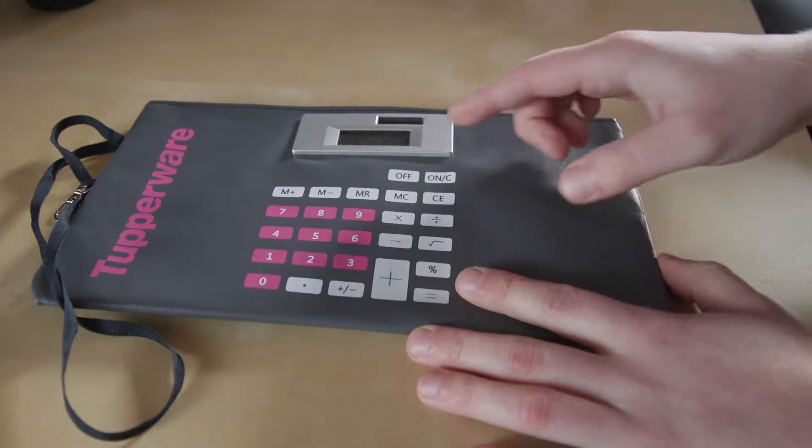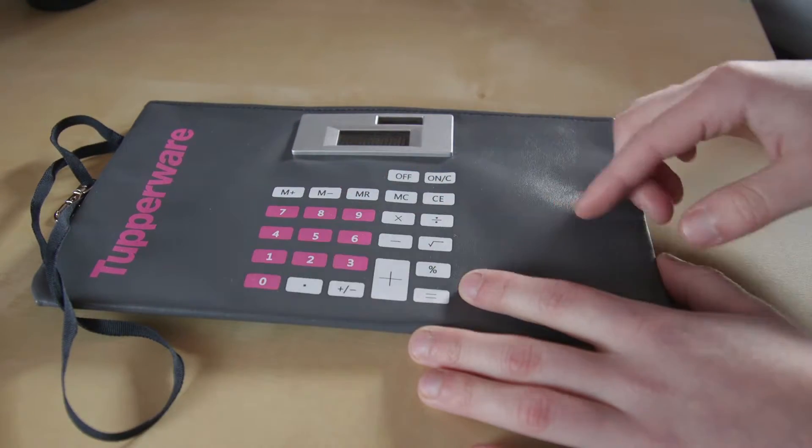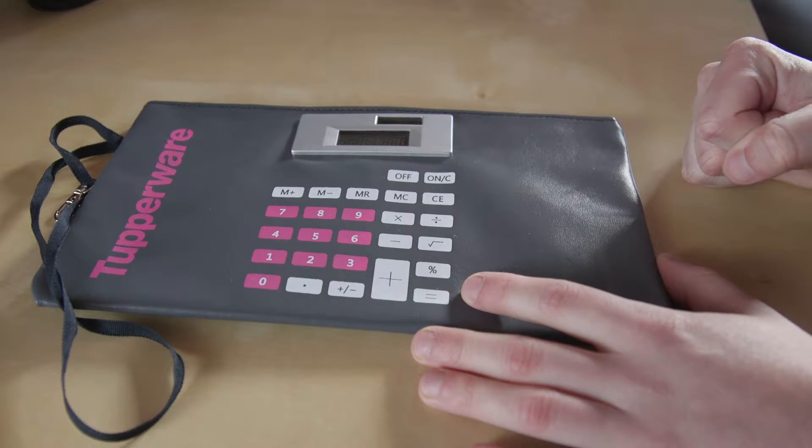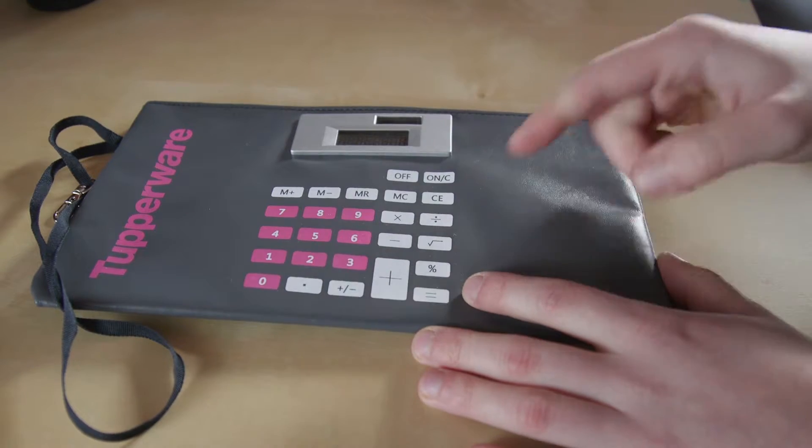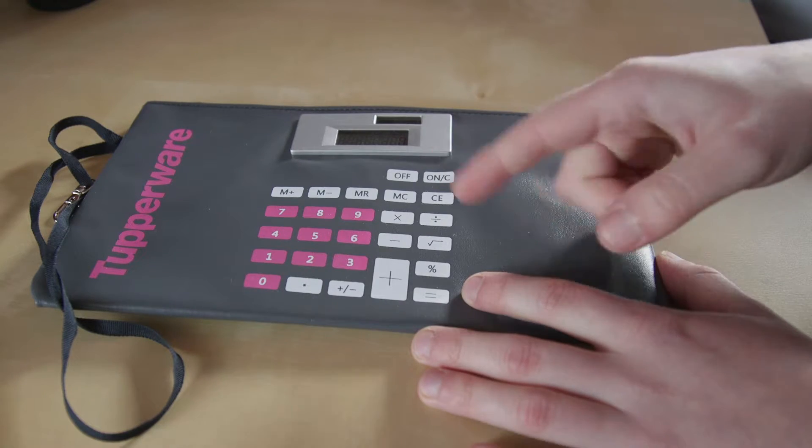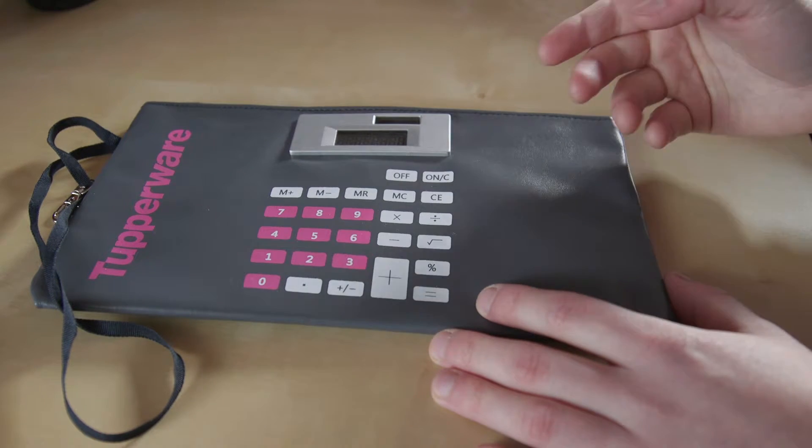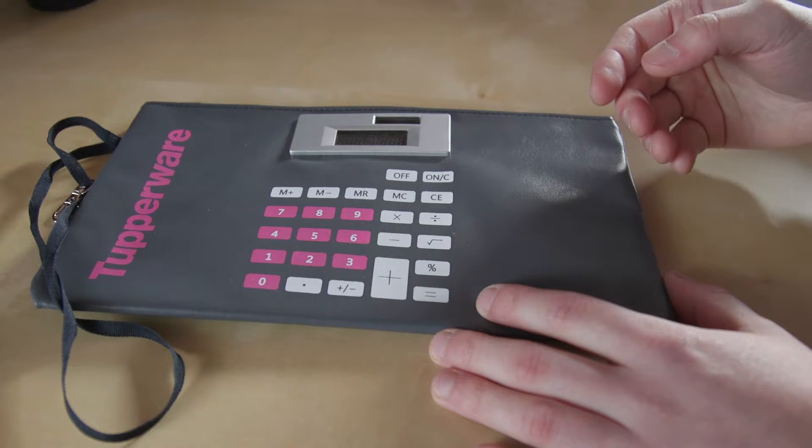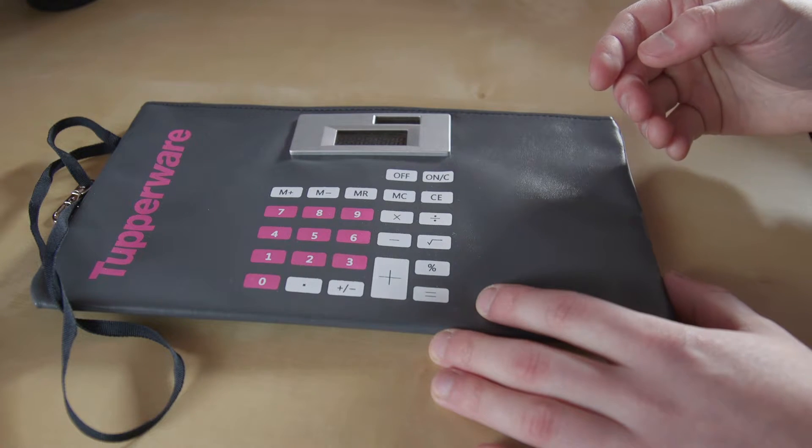What I may want to do is punch in the amount of Canadian Tire money I have inside the bag now, and then going forward, I can add in the amount of Canadian Tire money that I acquire in the future, so that I will have a nice running total of how much Canadian Tire money is in my Tupperware bag.